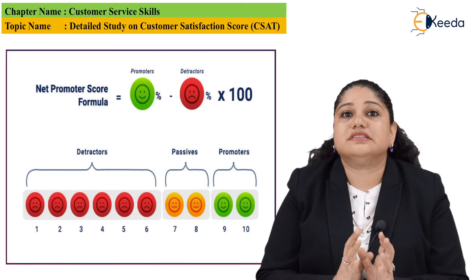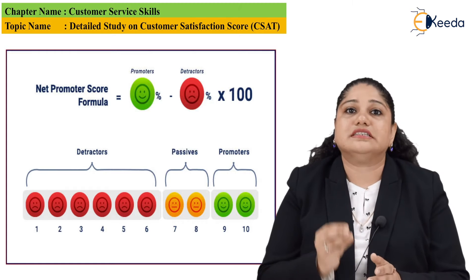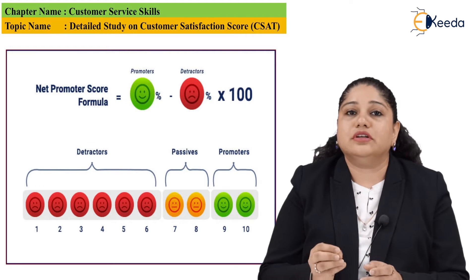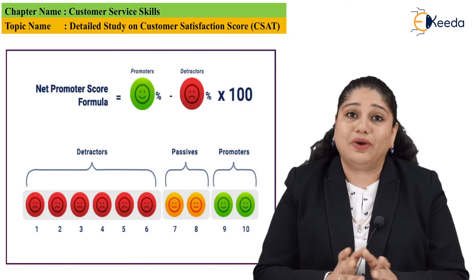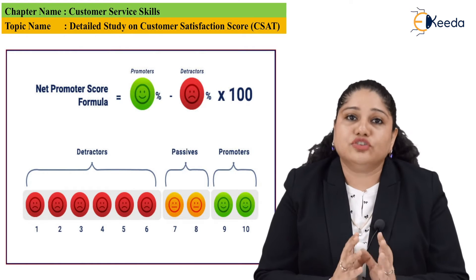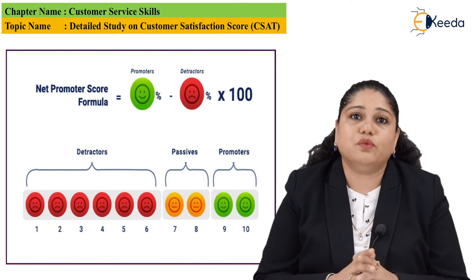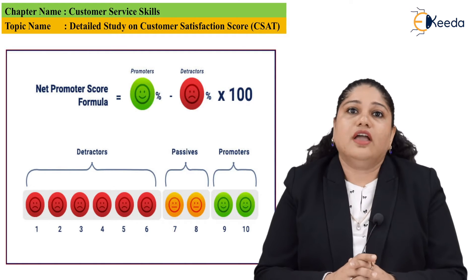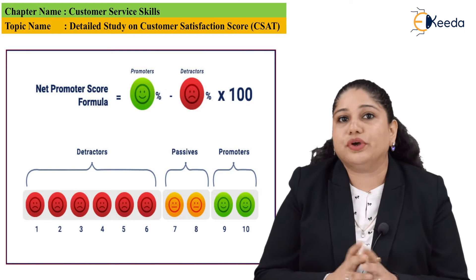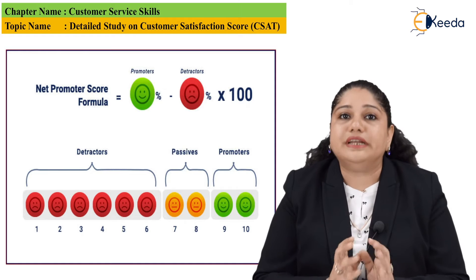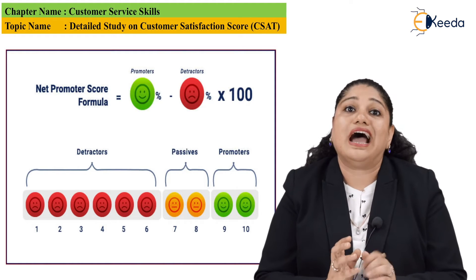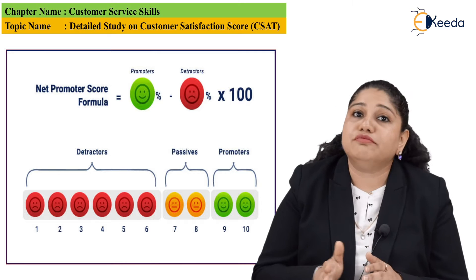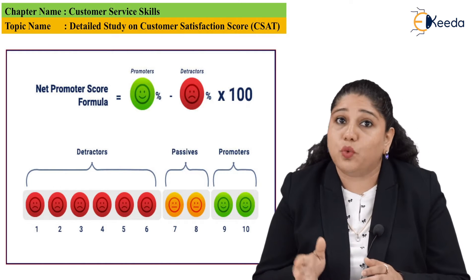Let's first understand what we really mean by the CSAT score. The CSAT score is something where customers come into our organization with a requirement — a customer need, which we call CNs. Every day we work upon satisfying those needs. I have also discussed this in the Kano model video, which gives you a brief idea on product information and how well you can attribute various features to your product.